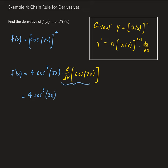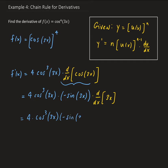Now we're going to take the derivative of the cosine term. The derivative of cosine is minus sine, so that's going to be minus sine of 3x. Then we're going to take the derivative of the inside part, which is 3x. So we have 4 times cosine cubed of 3x times minus sine of 3x.